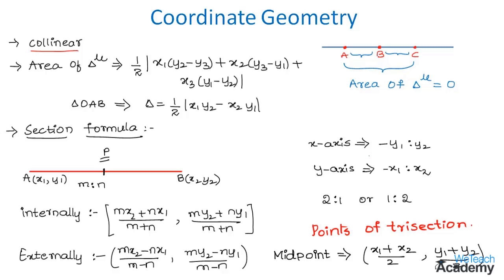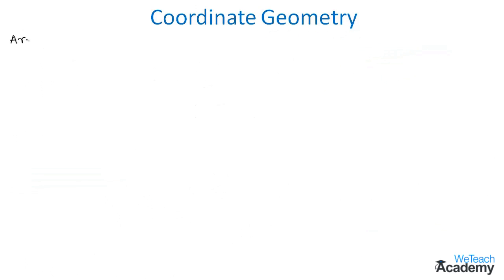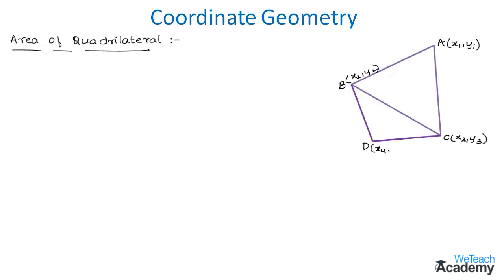Now let us discuss the area of a quadrilateral. Consider a quadrilateral with vertices A, B, C, D. The area of quadrilateral ABCD is the sum of the areas of triangle ABC and triangle BDC.